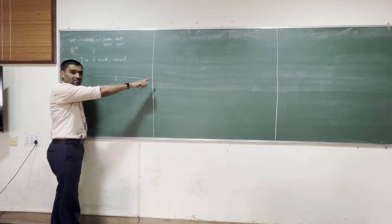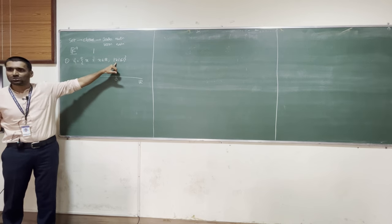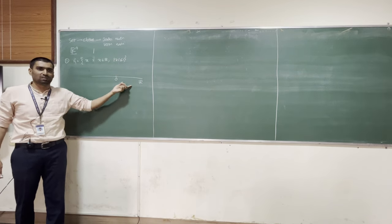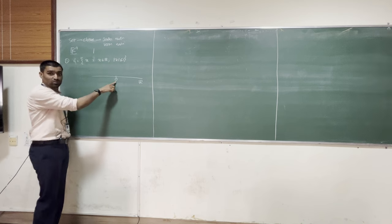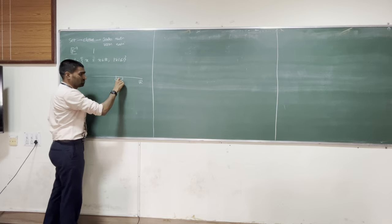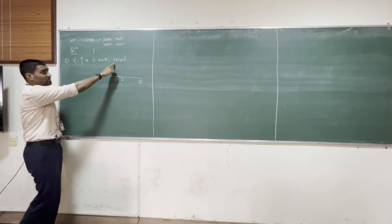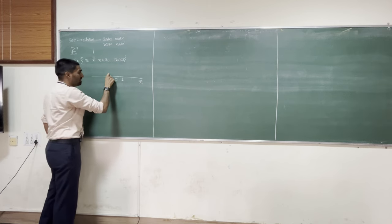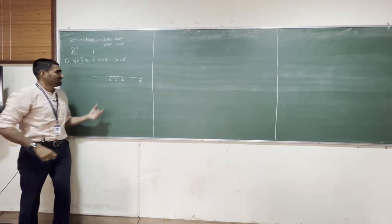If you take minus 2, the modulus of minus 2 is 2, and 2 is not less than 1, so minus 2 is not in the set. What about plus 2? No, it's not there either. 0 is there, yes. What about 0 to minus 1? It is included, because the magnitude is less than or equal to 1. If I put minus 1 here, the magnitude of minus 1 is equal to 1, so this is okay. So this is essentially my set.